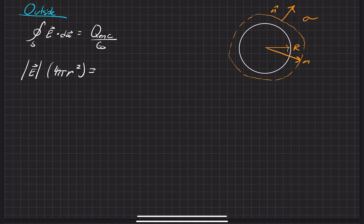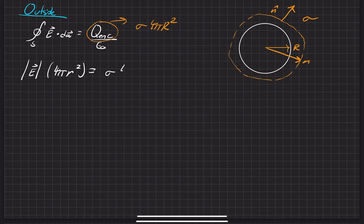That is equal to the charge that's enclosed. Our charge in terms of everything we were given — the radius and the surface charge density — is going to be equal to sigma times the surface area of that charge, which is 4 pi big R squared. So we write that out explicitly: sigma times 4 pi big R squared, divided by epsilon naught.